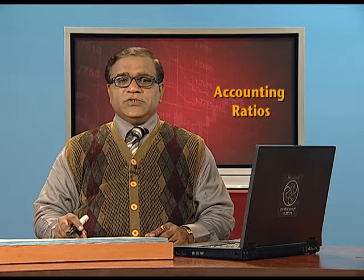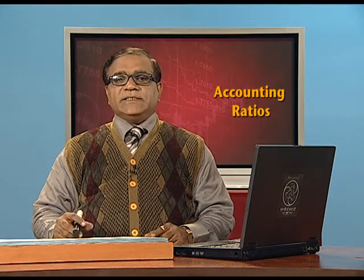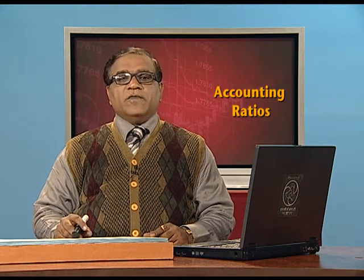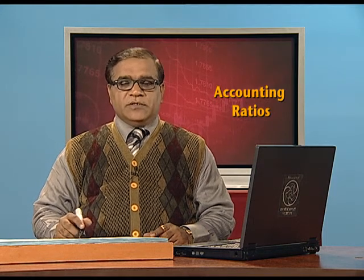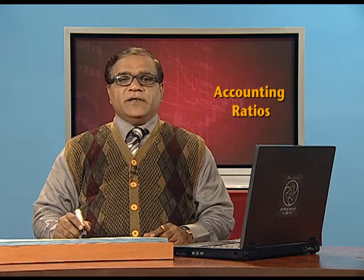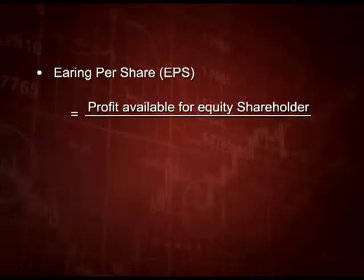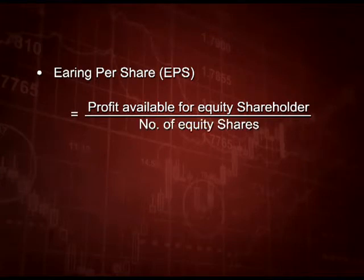The next ratio is earnings per share. As the name suggests, we are trying to calculate what we are earning on one share. This ratio is calculated by dividing profit available for equity shareholders by the number of equity shares.